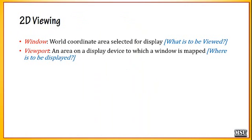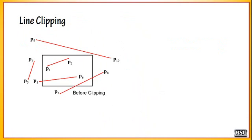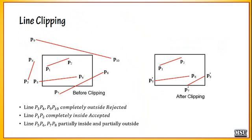We already discussed about 2D viewing, what is a window and viewport, and how to convert from window to viewport. In the last video lecture we discussed about the Cohen-Sutherland line clipping algorithm. Using that algorithm you can easily clip a line, but there is a disadvantage: if a line crosses the window more than once, you have to apply the Cohen-Sutherland algorithm twice. That is the main disadvantage.